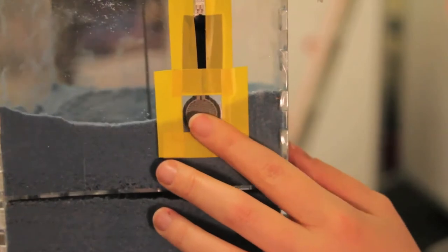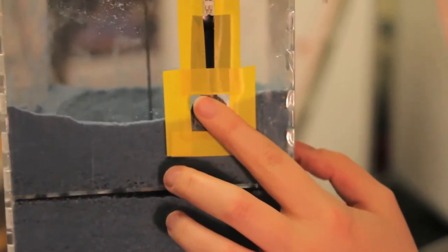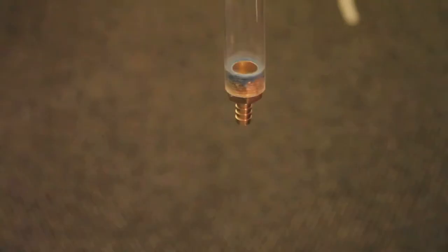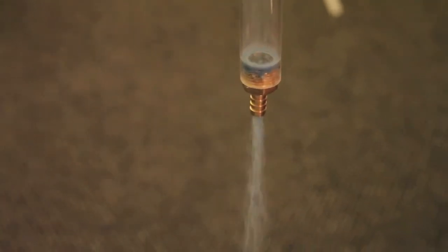A force-sensing resistor on one side allows people to control the rate at which sand flows out. A strong squeeze releases a torrent, while a gentle touch yields just a few grains.